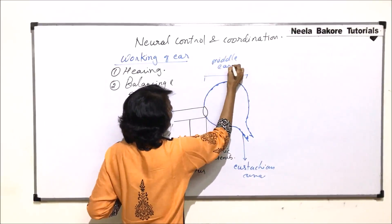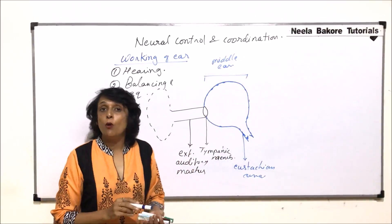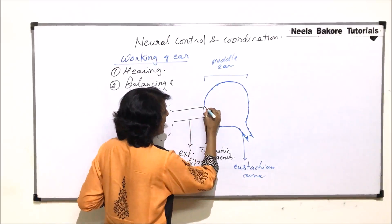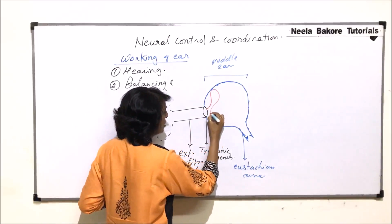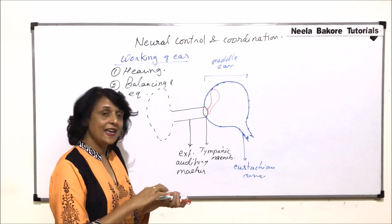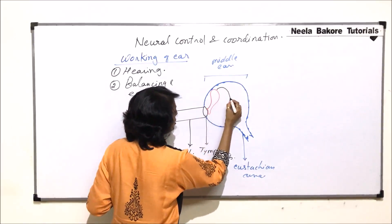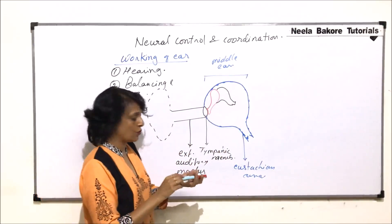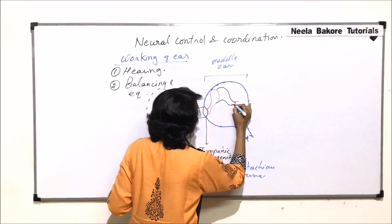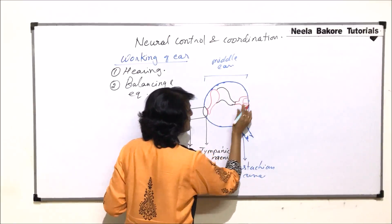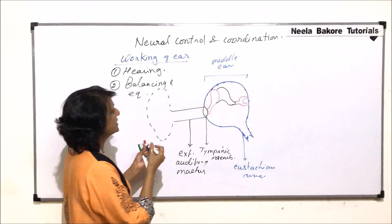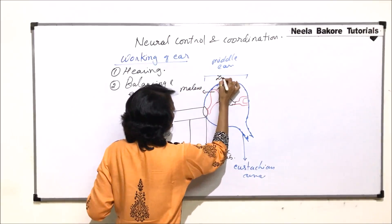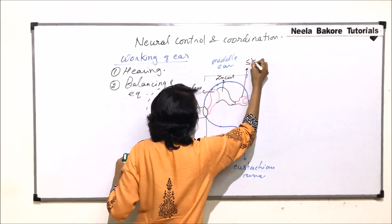In the middle ear there are three bones called ear ossicles. The first one, hammer-shaped and attached to the tympanic membrane, is the malleus. The second, anvil-shaped, is the incus. The third and smallest, stirrup-shaped, is the stapes. Let us label these three bones: malleus, incus, and stapes.